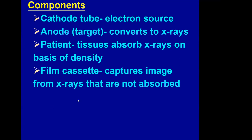Finally, we have the film cassette on the posterior side of the patient. The film cassette captures the image from the x-rays — specifically the x-rays that are not absorbed.